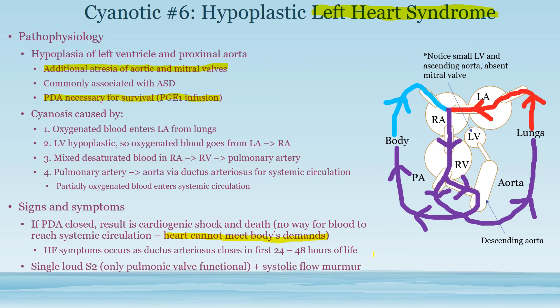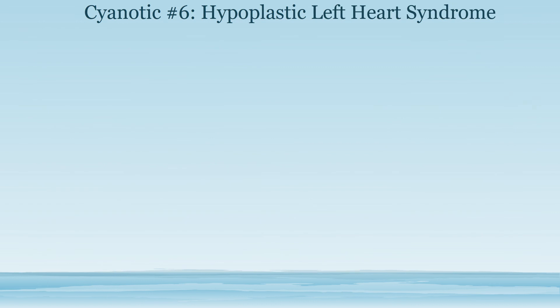You get a loud single S2 because there's no aortic valve — the only valve present is the pulmonic valve, which has very high pressures distal to it because it's pumping all the blood into the circulation. You also get a systolic flow murmur through the pulmonary valve because of all the blood flowing through it.